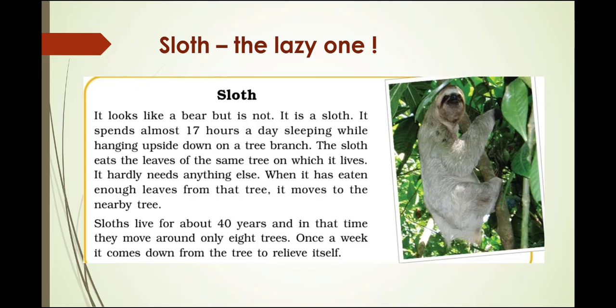The sloth eats the leaves of the same tree on which it lives. It hardly needs anything else. When it has eaten enough leaves from one tree, it moves to another tree nearby. Sloths live for about 40 years and in that time they move around only 8 trees. Once a week it comes down from the tree to relieve itself.